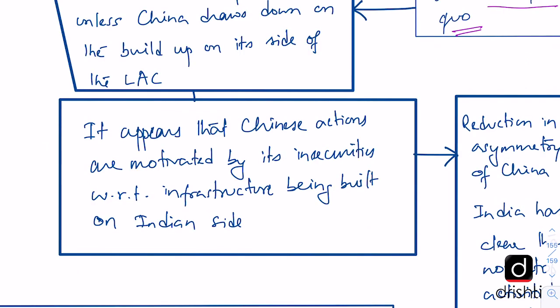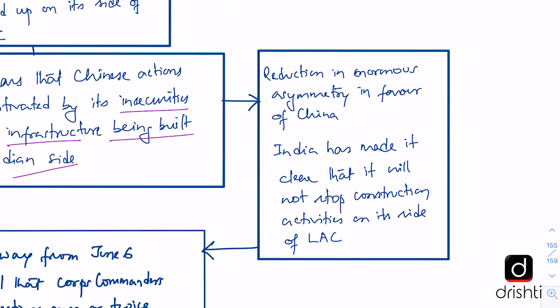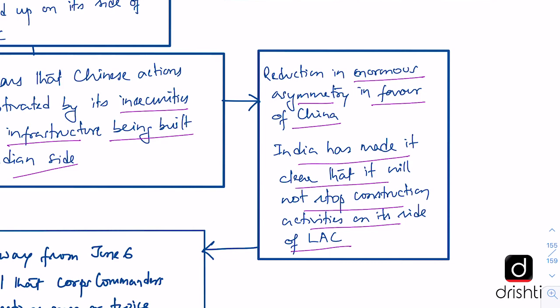China has brought in heavy artillery and substantially increased troop deployment. India has made it clear that until China draws down its buildup, India will not decrease its troop levels on its side of the LAC. The editorial says Chinese actions on the western border appear motivated by insecurities regarding the infrastructure now being built on the Indian side. For a long time there has been enormous asymmetry in favor of China on border infrastructure, and only in the last decade has India been trying to catch up. India has also made clear it will not stop construction activities on its side.